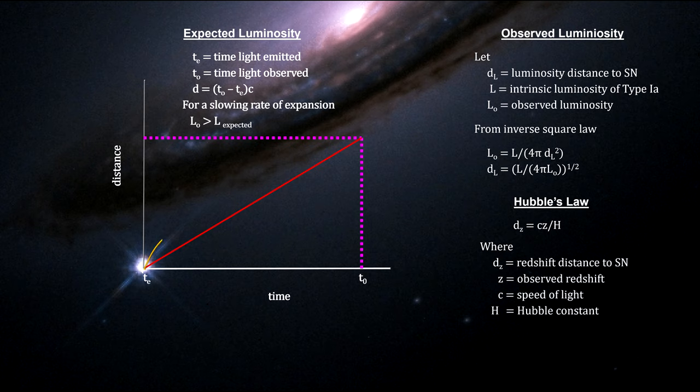But if the expansion is slowing down, the expansion rate in the past would have been greater than what we see now, which means it would have taken a shorter time to expand from its size at light emission time to its present distance compared to a non-accelerating universe.